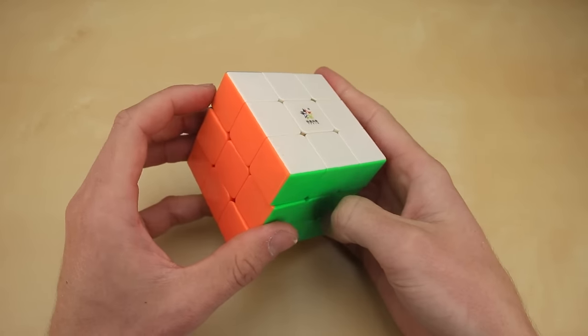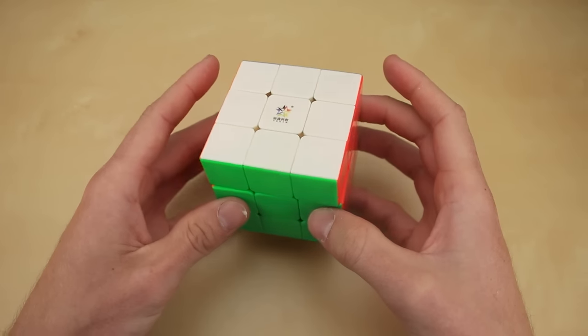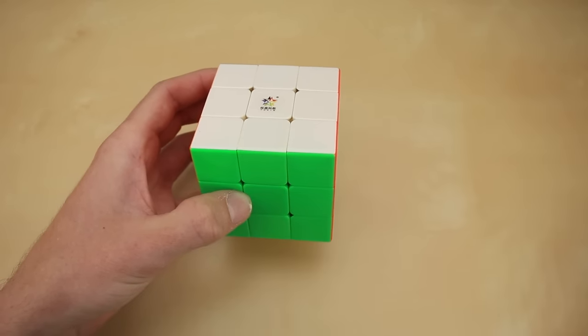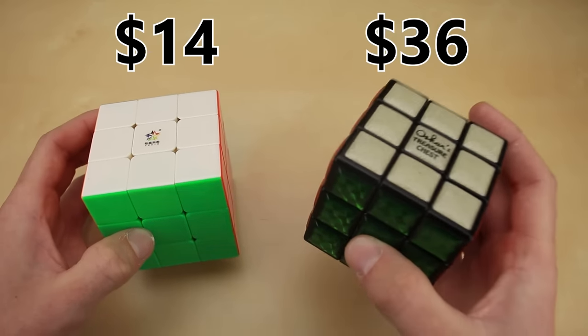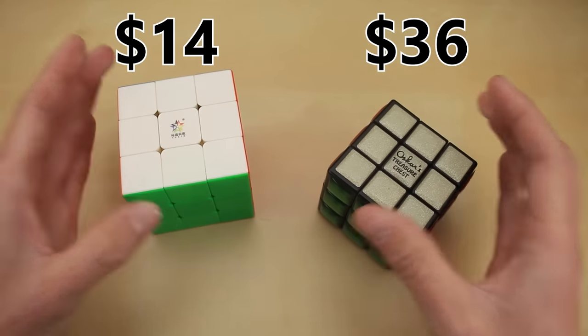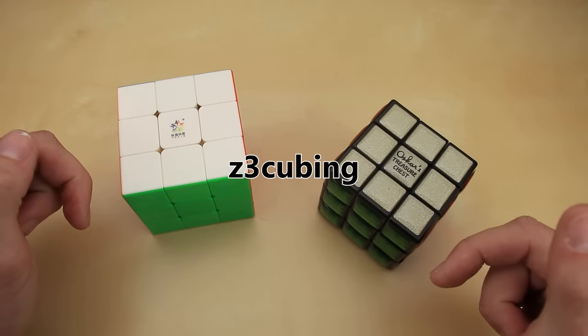Anyway, I've never tried out the Yushin treasure chest before, so let's spend a minute to check it out. It's a much cheaper alternative to the original Oscar's treasure chest, just $14 at thecubicle.com, compared to over double that for the original, and as always you can use discount code Z3 cubing for 5% off, link in the description.